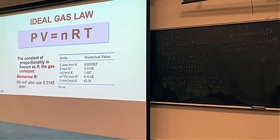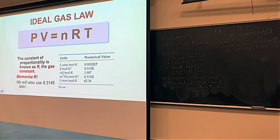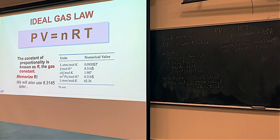R is the new player here, called the universal gas constant or the gas constant. In this class and in chemistry classes, I would want you to memorize this version of R: 0.082057. That's the one we're going to use in this chapter almost exclusively. I'll call this the gas R.